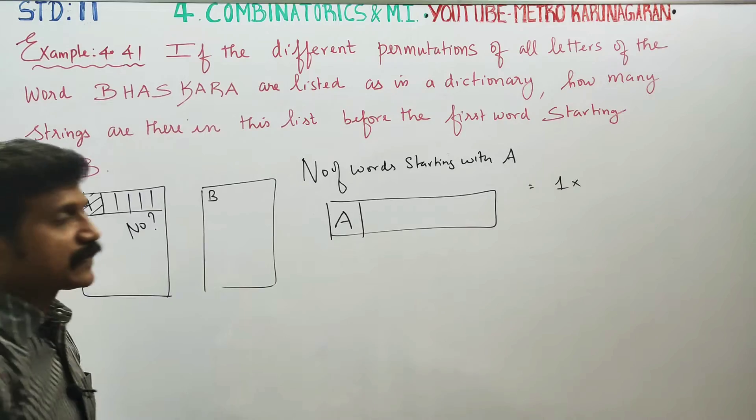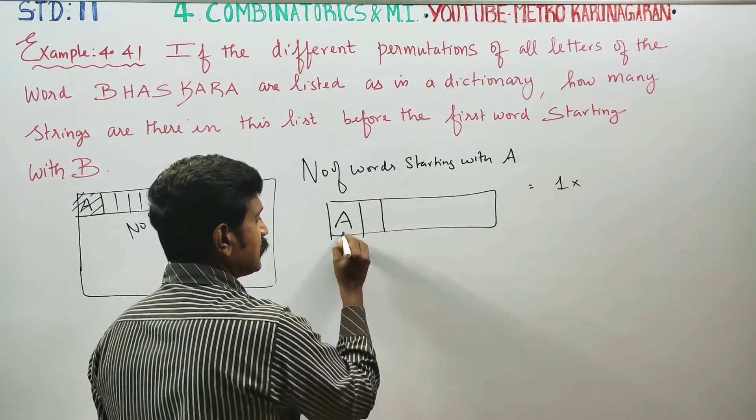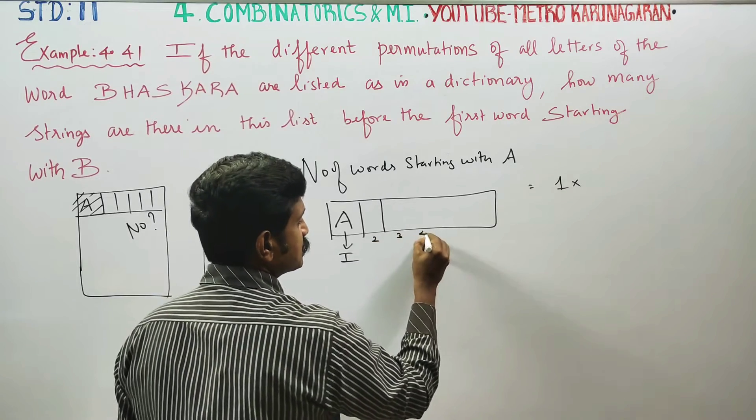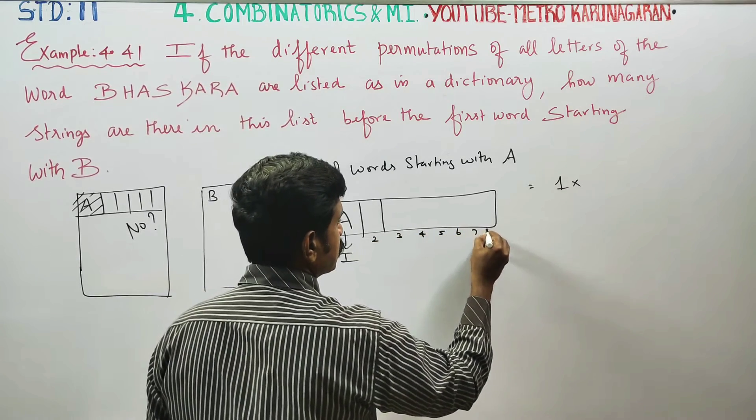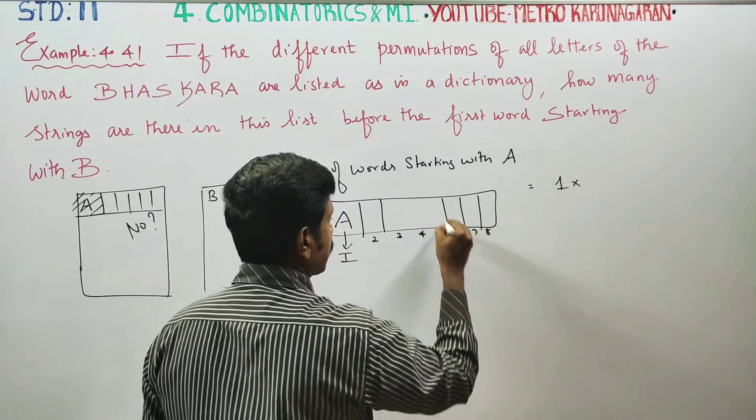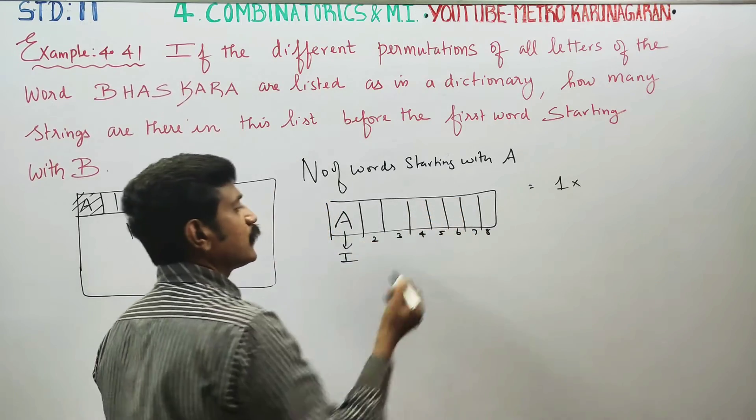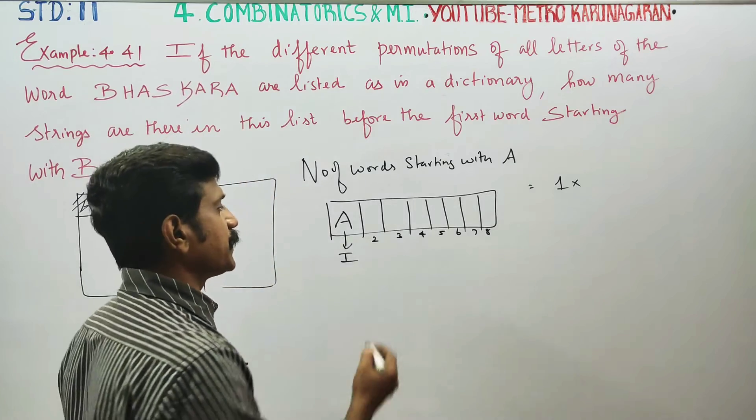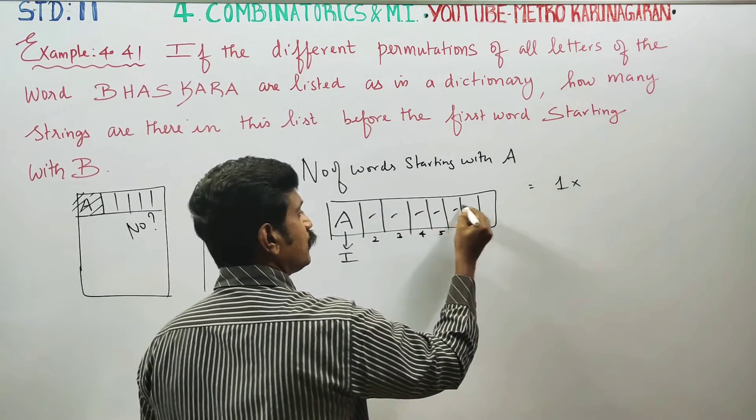8 letters total. 1st place fixed, 2nd place, 3rd place, 4th, 5th, 6th, 7th, 8th - this place is vacant. This place is vacant: 1, 2, 3, 4, 5, 6, 7 vacancies.